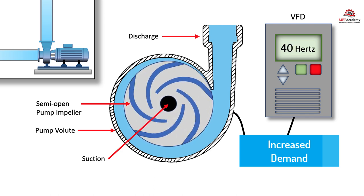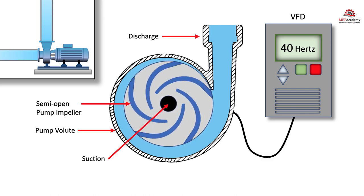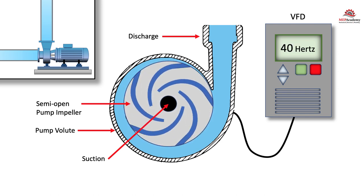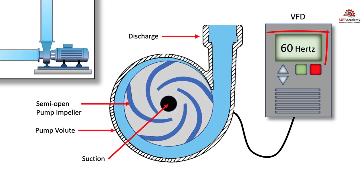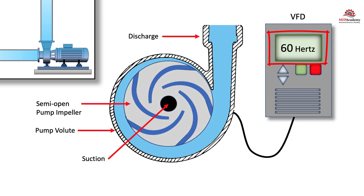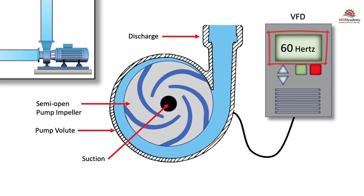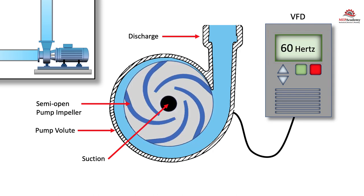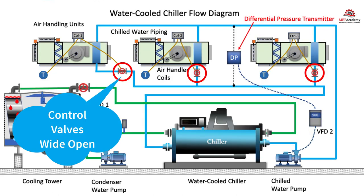And as the demand increases the VFD will send a signal to the motor to speed up. Like here this is full speed so they're getting the full GPM to the system which probably means that all the air handler coils, fan coils, all the control valves are open wide. It's a very hot day. They want chilled water at full flow.